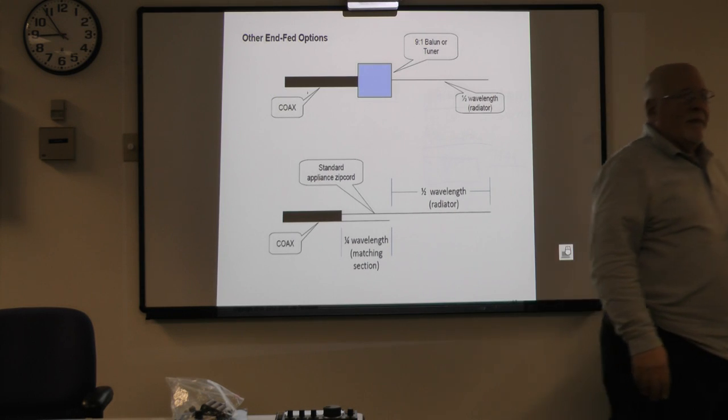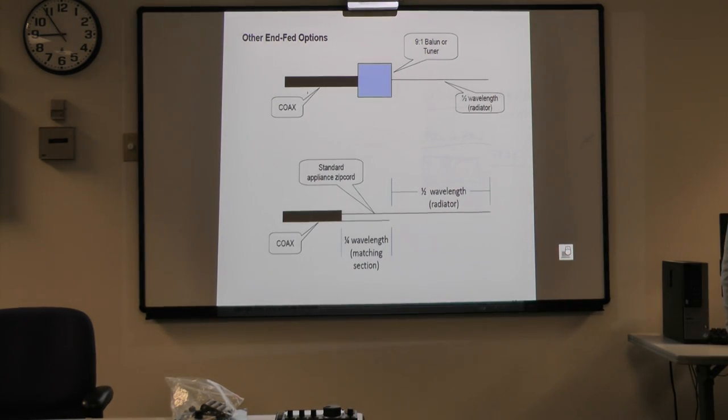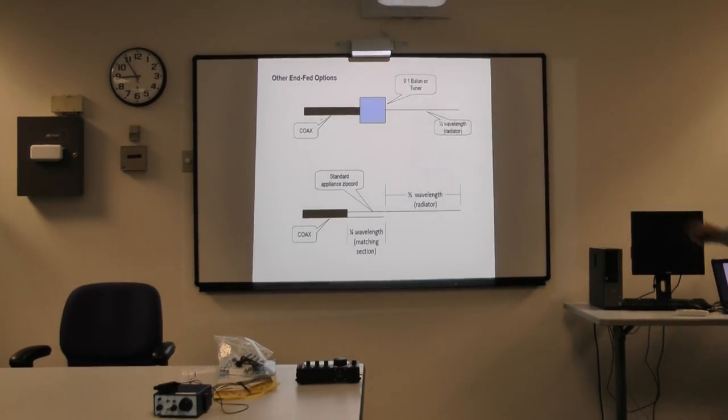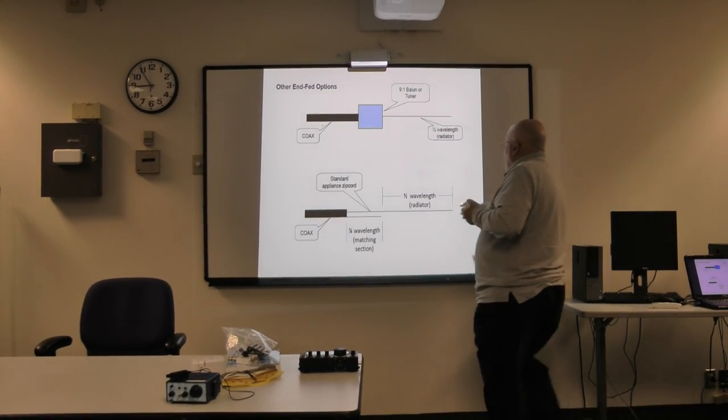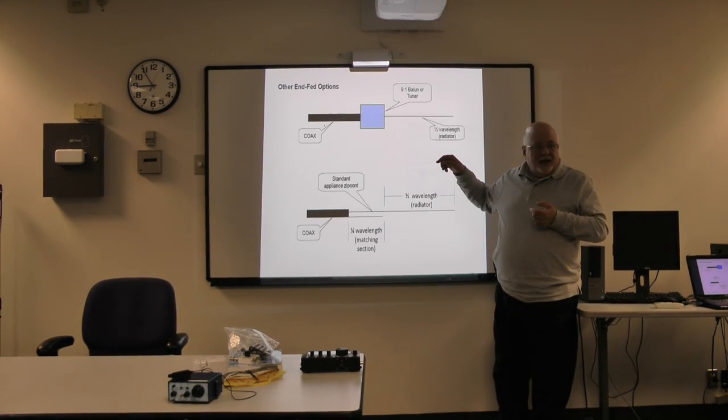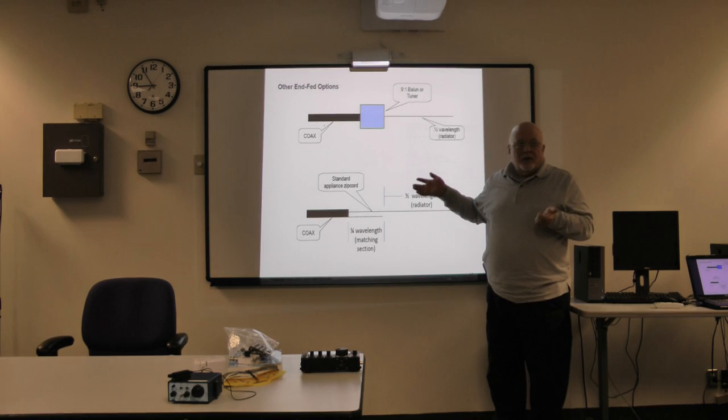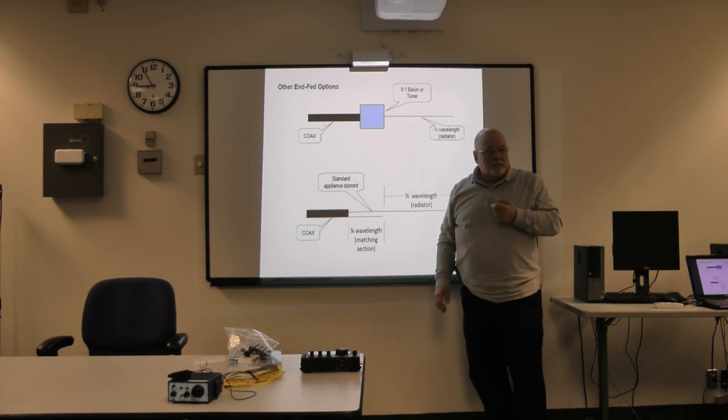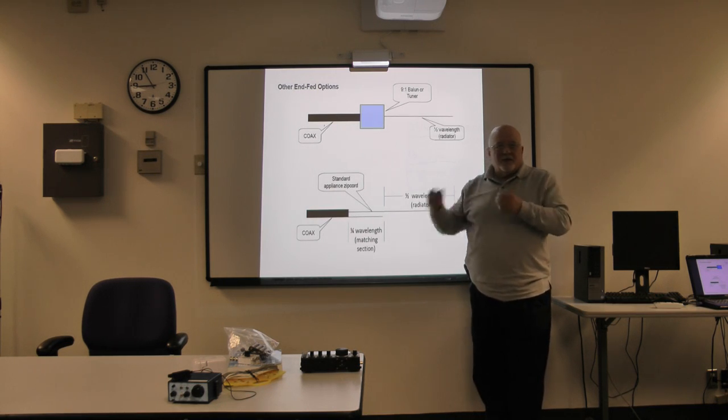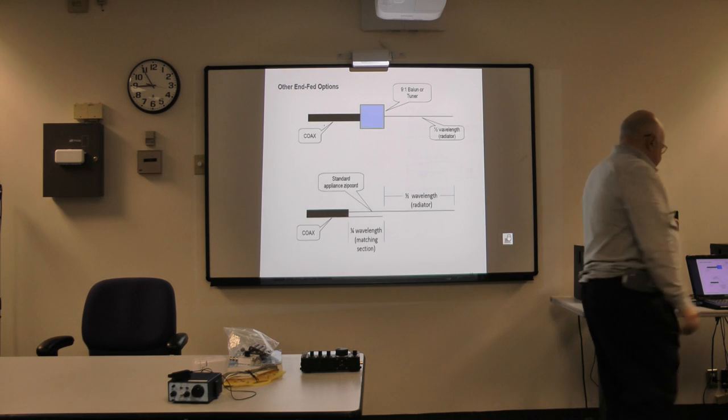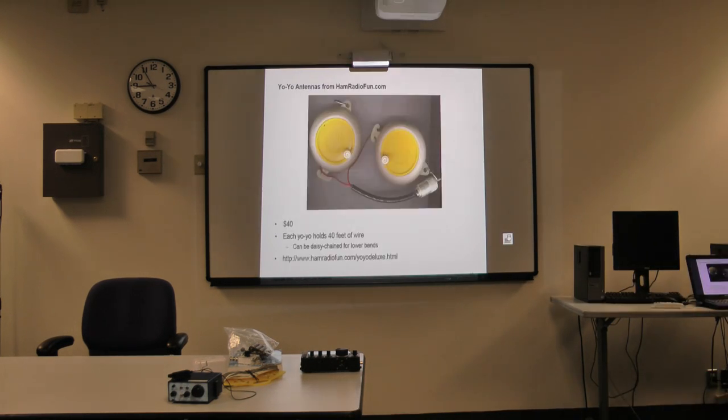Does he terminate it at the peak? Or does he actually run it horizontally? No, terminates it at the peak. Now, with any of these, you can bring them up vertical and then across as an inverted L. You can make them slopers. You can do whatever you want. So you can set this up as a vertical if you can get a line up. In his case, he's setting up as a vertical by using that fiberglass mast.